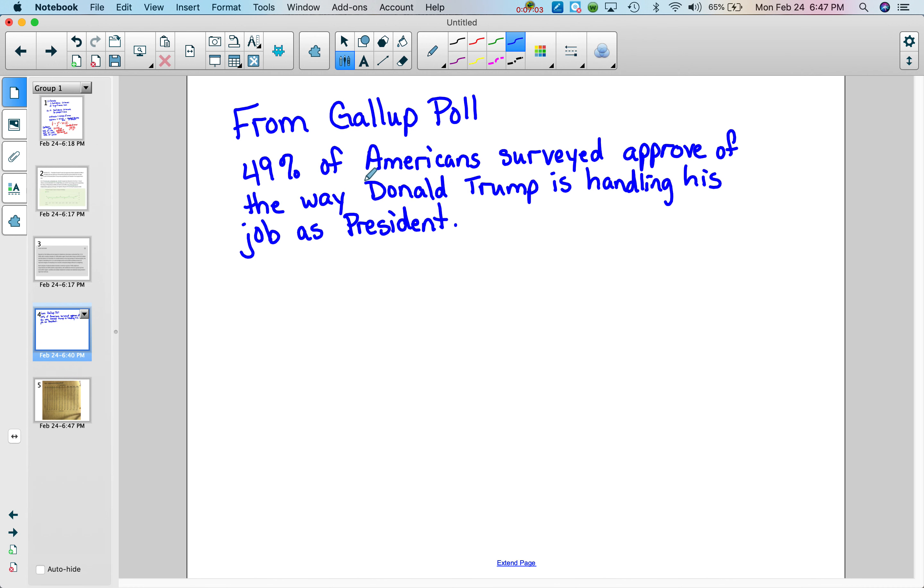So from that Gallup poll, 49% of Americans surveyed approve of the way Donald Trump is handling his job as president. We're going to create a 95% confidence interval. We know from the poll that N was 1,028, and we're told that the p hat value was 0.49. 49% of the people surveyed approve.